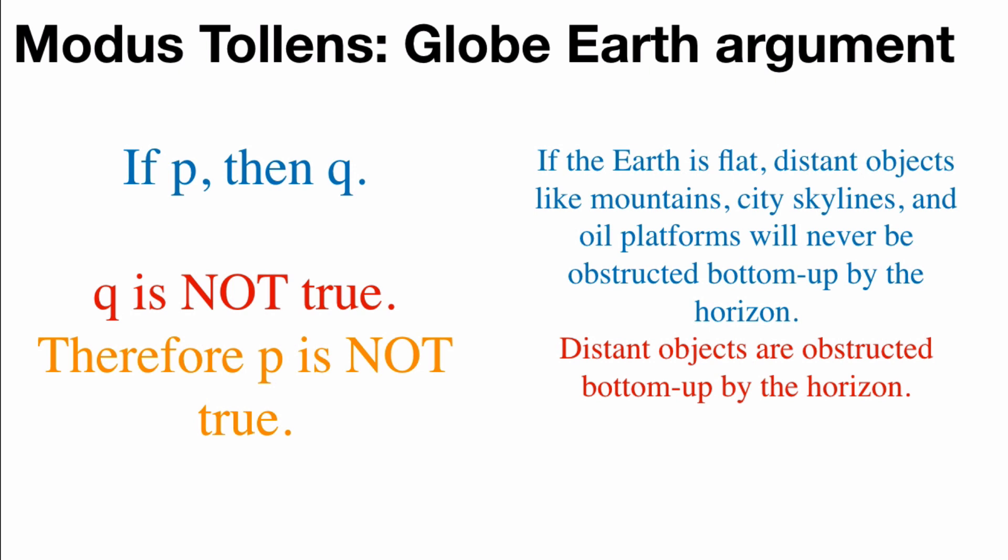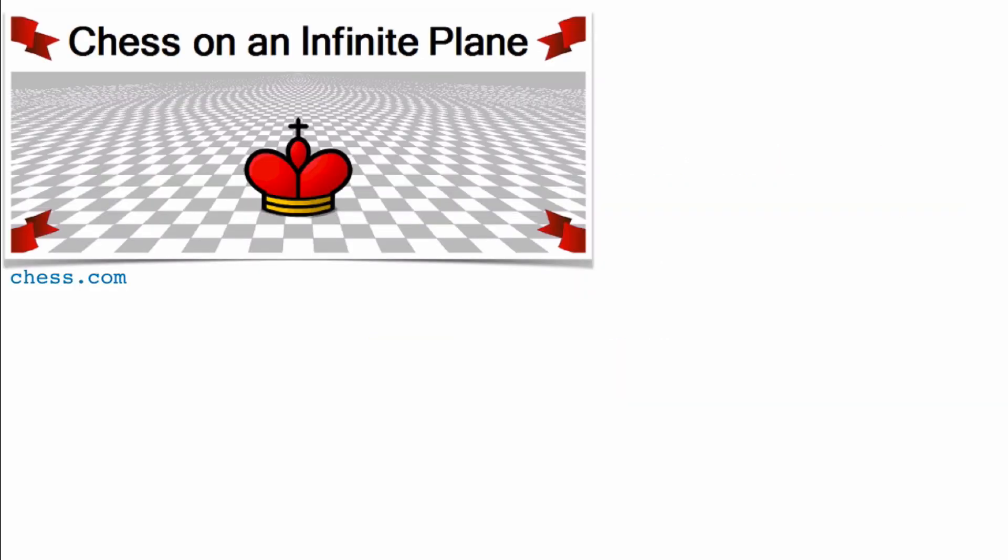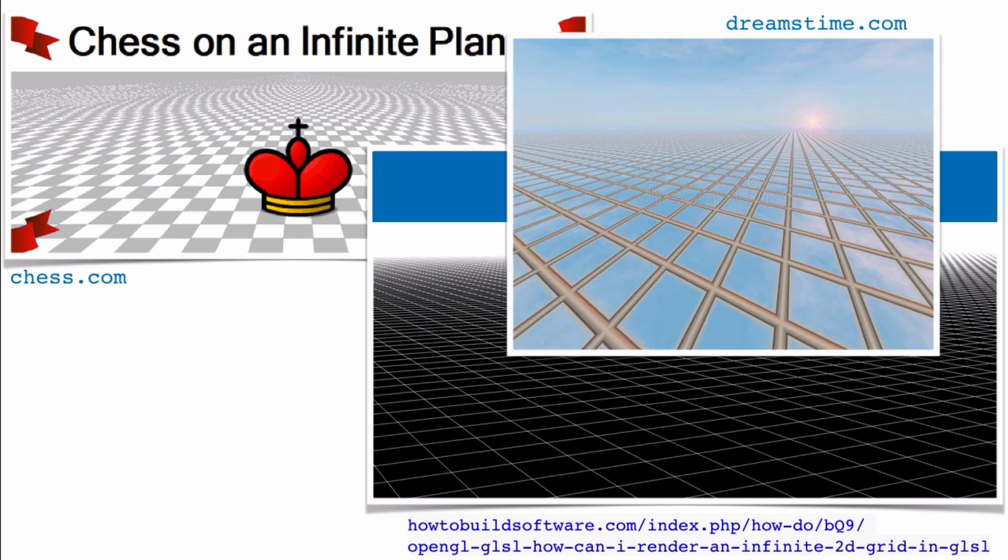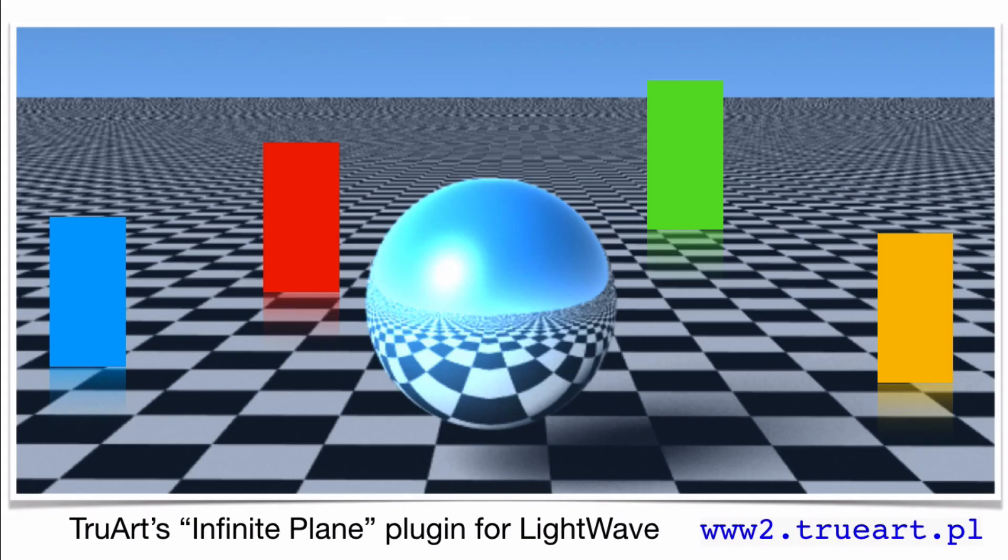But distant objects are obstructed bottom up by the horizon. Therefore, the earth is not flat. But are there flaws in this reasoning? Well, first off, let's take a look at the logic behind it. Here we have just a CGI version of an infinite plane. An infinite plane does not actually exist in the real world. You could program the computer to kind of graphically represent it. And there's a couple different ways of doing it, using different pieces of software. Here's actually a piece of clip art, a stock photo of an infinite plane.